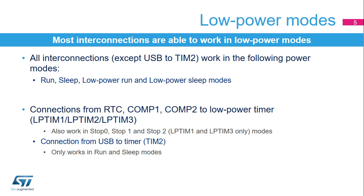Peripherals can be interconnected using the interconnect matrix even when the circuit is in a low-power mode. The low-power modes that can be used are run, sleep, and low-power sleep modes, except for the USB to timer 2 connection, which can only be used in run and sleep modes.